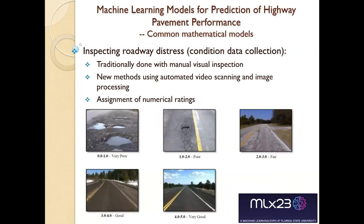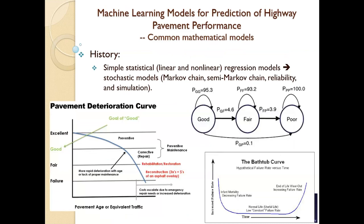Back to our topic — we inspect roadway distress, and right now more than 70% is still manually collected, meaning you send inspectors out to actually quantify those defects and potholes. The images range from very poor to excellent, and inspectors assign numeric ratings to them. Maybe 20–25% now use automated video scanning and image processing. You inspect those roadways, assign a score from zero to ten for each segment, keep this data over several years, and model the pavement condition relative to time to predict how long those pavements are going to last.